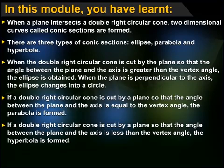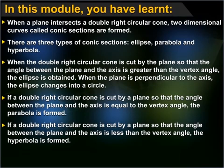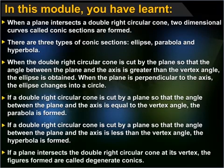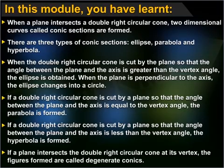If a double right circular cone is cut by a plane so that the angle between the plane and the axis is less than the vertex angle, the hyperbola is formed. If a plane intersects the double right circular cone at its vertex, the figures formed are called degenerate conics.